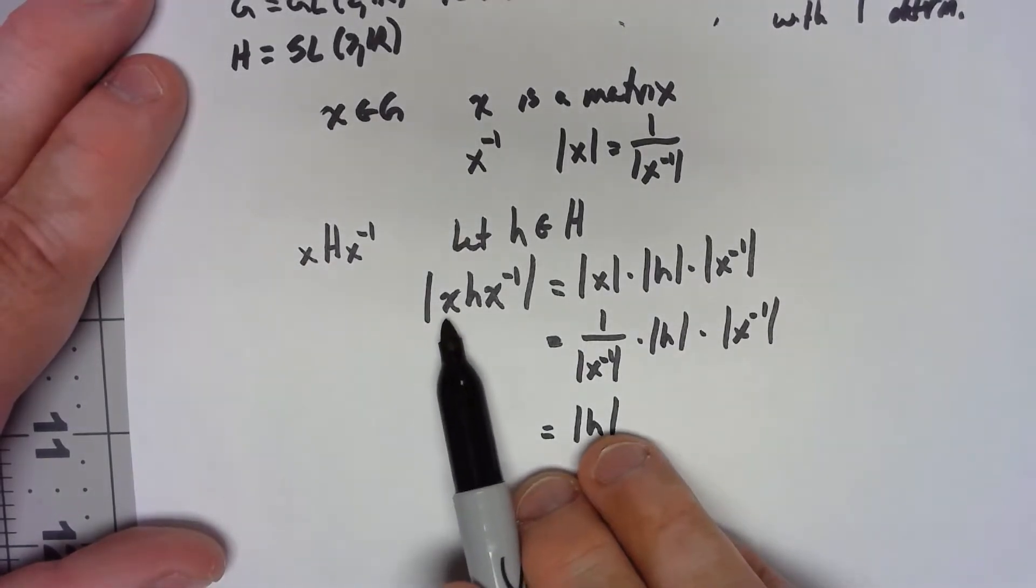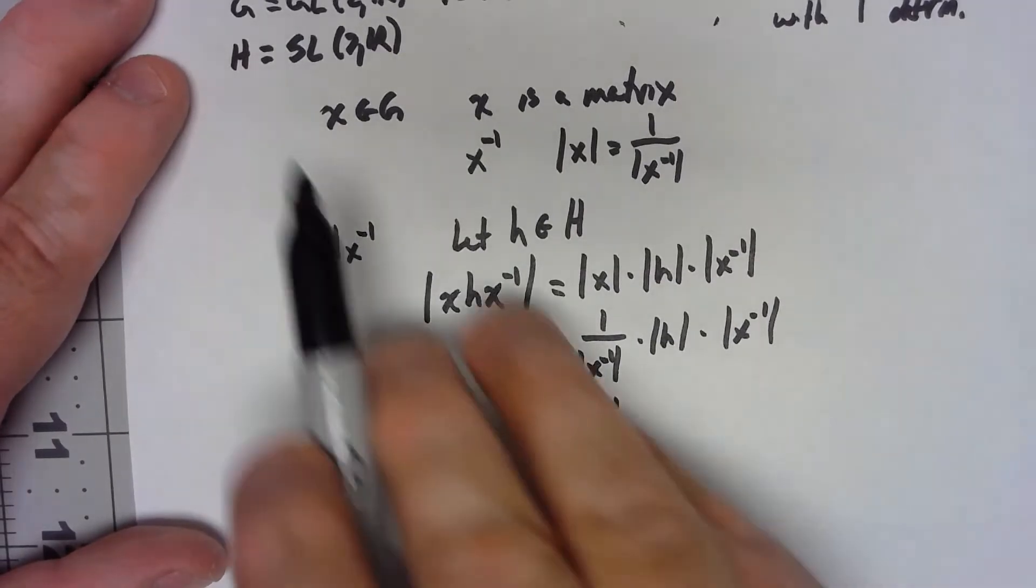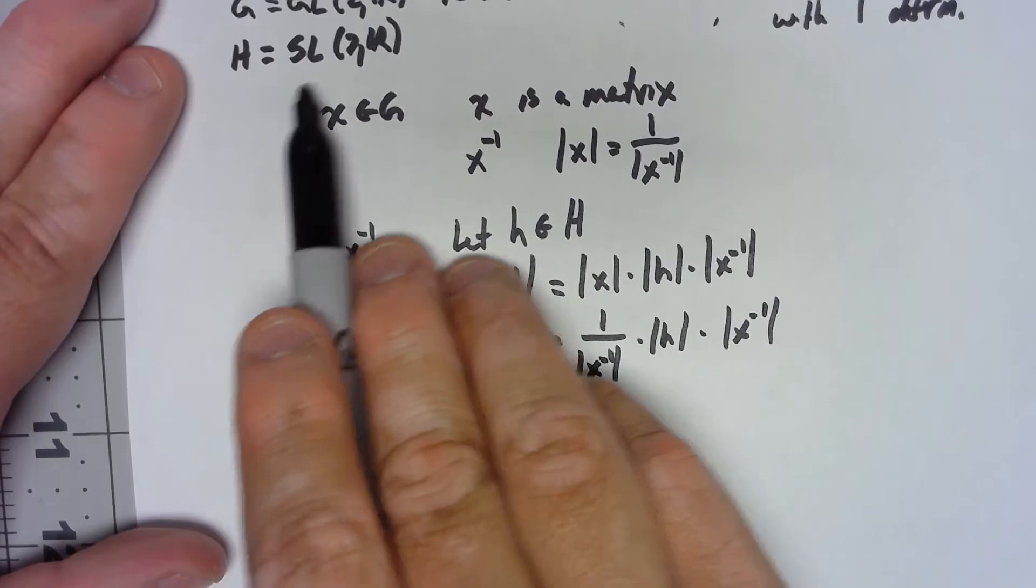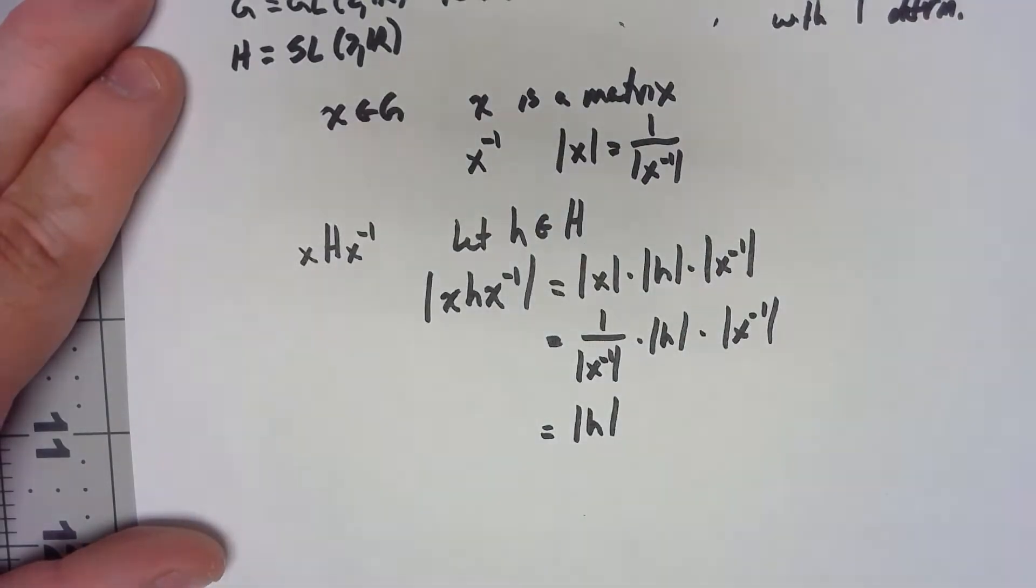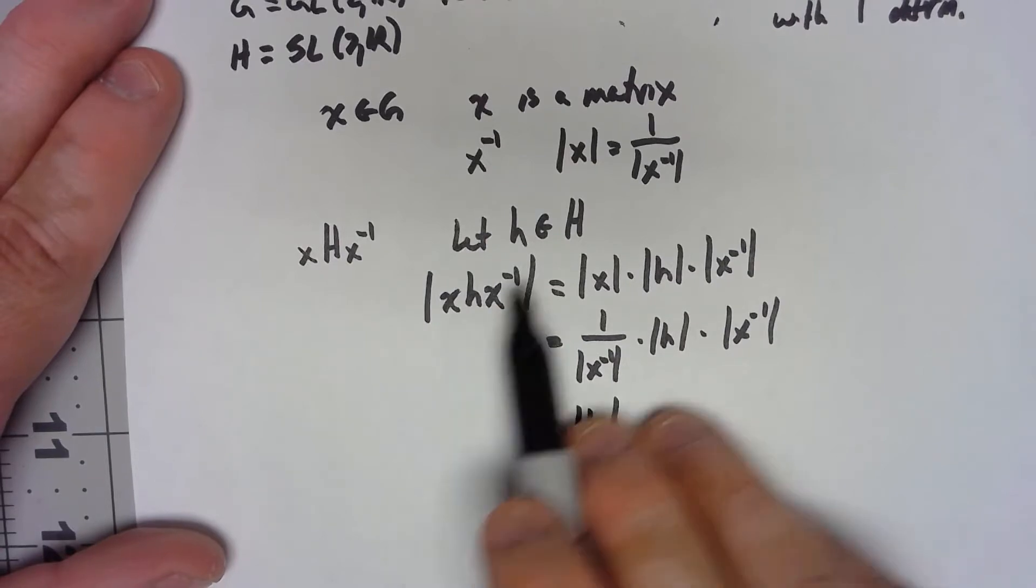We just said the determinant of X is 1 over the determinant of X inverse. So wait a minute, the determinant of XhX inverse is the determinant of h. Since h was in H, that meant that it had a 1 determinant, so XhX inverse is in H.